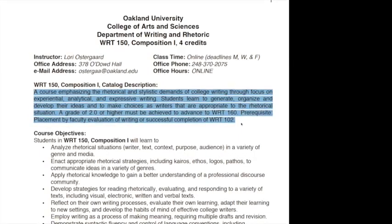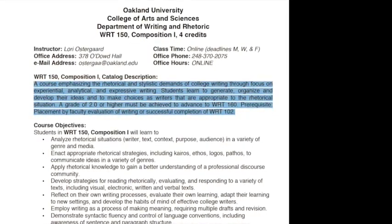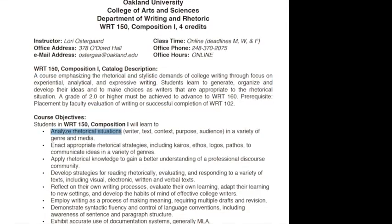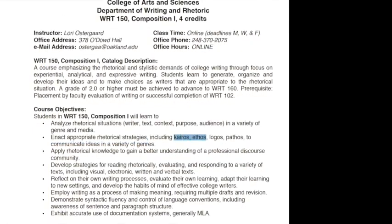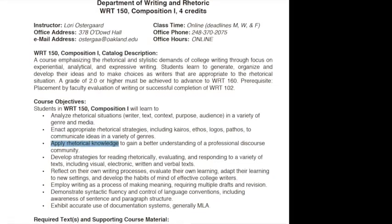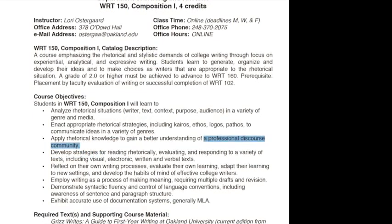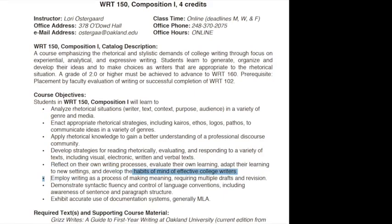You're going to learn to generate, organize, and develop your ideas, and to make appropriate rhetorical choices. You'll need to earn a grade of 2.0 or higher in Writing 150 in order to move on to Writing 160. In your Writing 150 class this semester, you're going to learn to analyze rhetorical situations and enact appropriate rhetorical strategies, including learning about kairos and ethos, and how to use logos and pathos in your work. You're going to learn to apply rhetorical knowledge to gain a better understanding of a professional discourse community — in this case, people working within your field of study. You'll develop strategies for reading rhetorically, reflect on your own writing processes, and employ writing as a process of meaning making. You'll demonstrate fluency with grammar and language, and you'll also be able to use MLA style by the time you leave here.